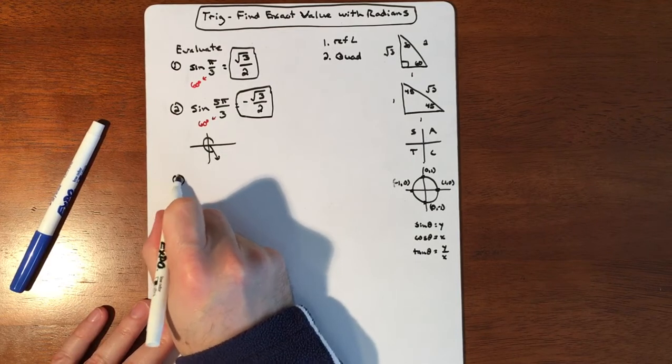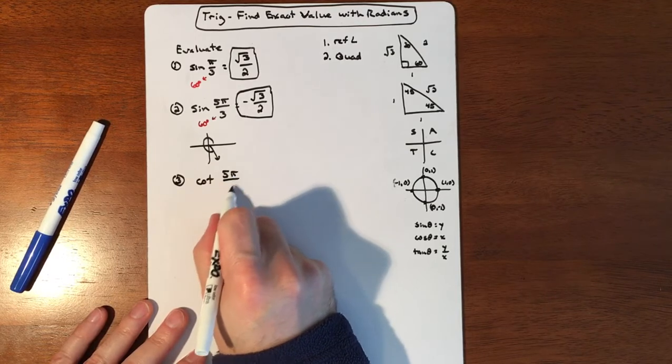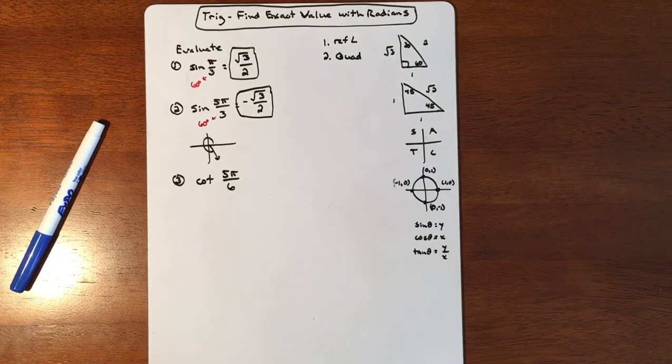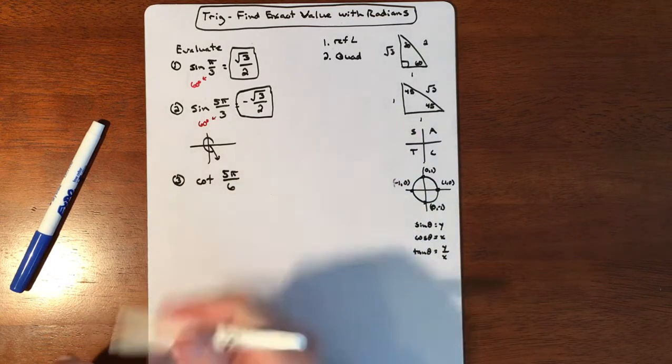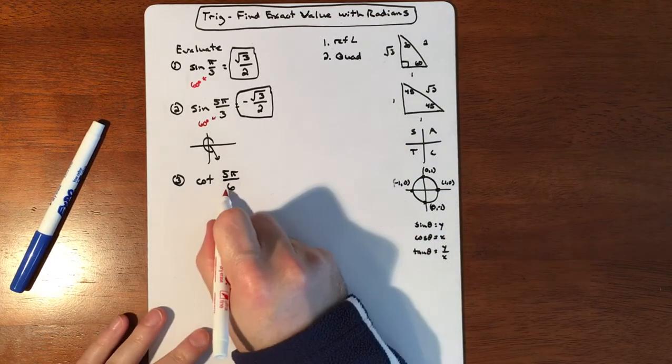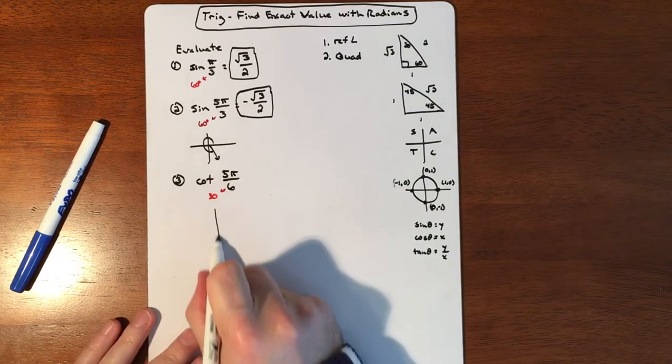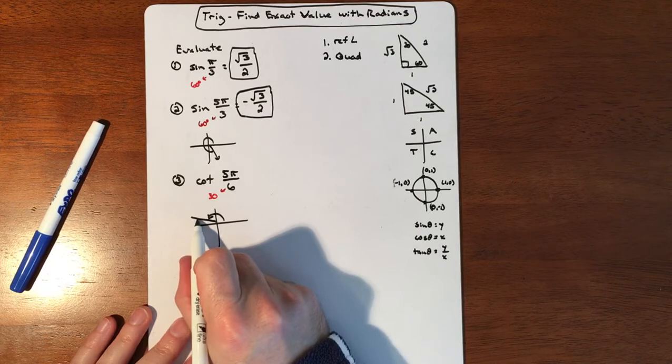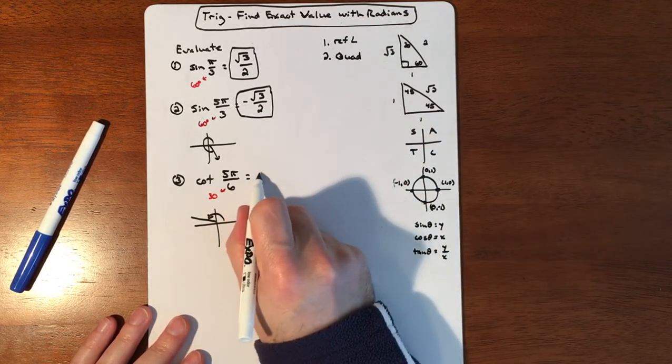So let's do a cotangent of 5 pi over 6. So if you do cotangent, you're really thinking that this is a tangent. So we're going to evaluate this whole thing as if it's a tangent, and then we'll flip it around. We'll flip it at the end. So 5 pi over 6, you're looking at a bunch of 30s. You got 5 of them, so that makes 150 degrees. So 150 degrees would be right there. So we're looking at doing tangent in the second quadrant. So our answer is going to be negative, negative something.